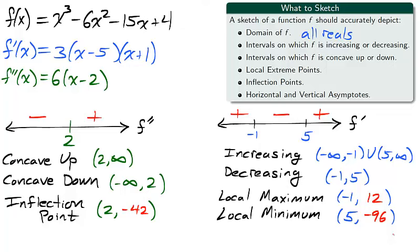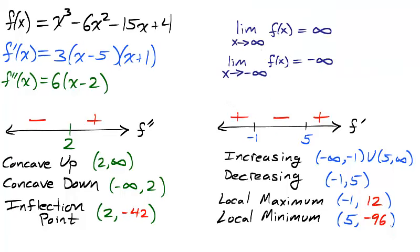Calculating f of negative 1, f of 5, and f of 2, the y values for all local maximum, minimum, and inflection points, we are in a position to sketch all but the end behavior of the function.